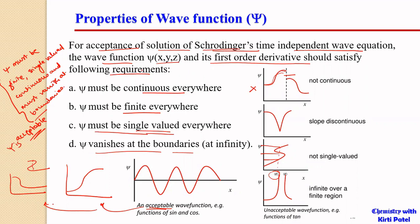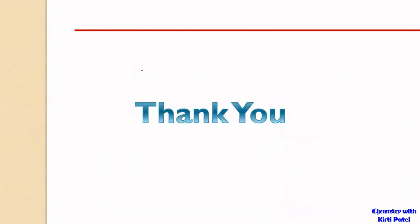Schrödinger's time-independent wave equation is very important as far as chemistry is concerned, because the solutions of this equation give us orbital shapes — the shapes of atoms, molecules, and their energy levels. Many different things important in chemistry from the point of view of atoms and molecules can be found from it. So this was for Schrödinger's wave equation. Thank you.